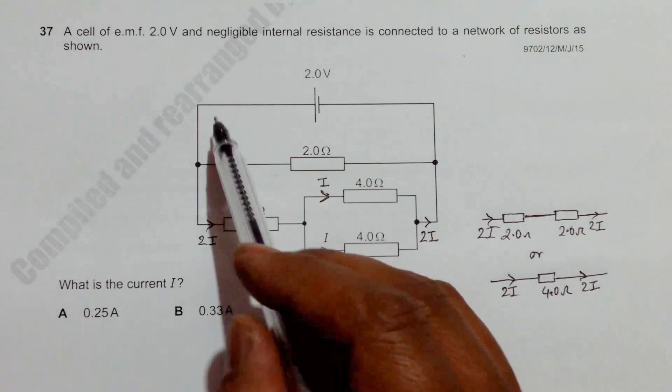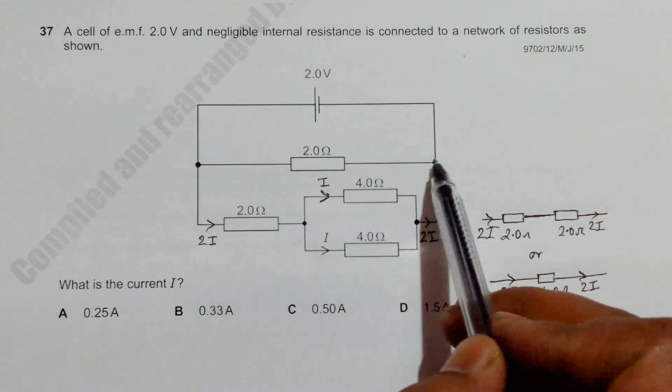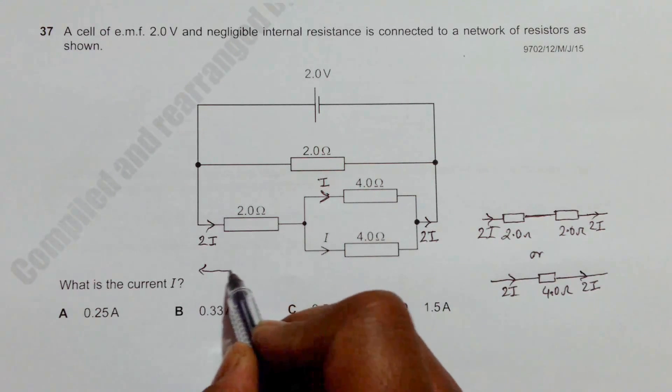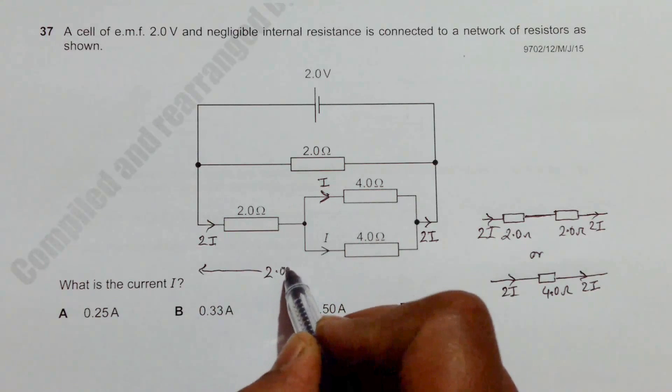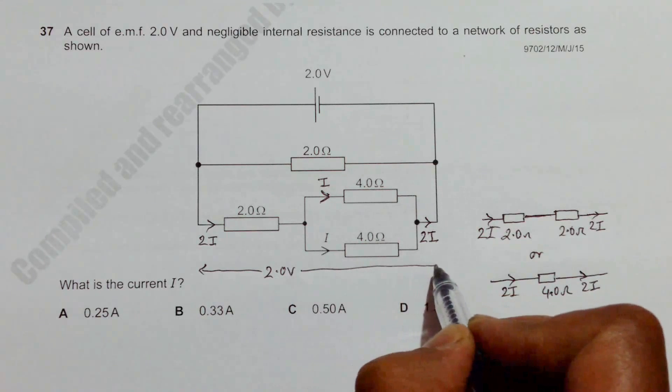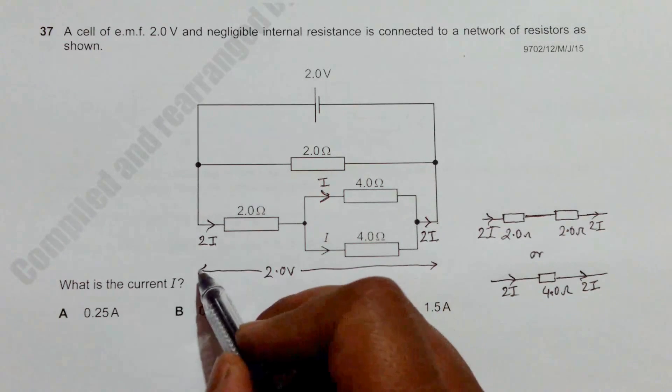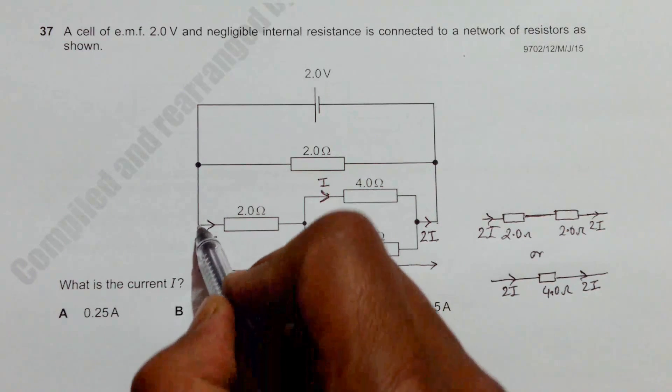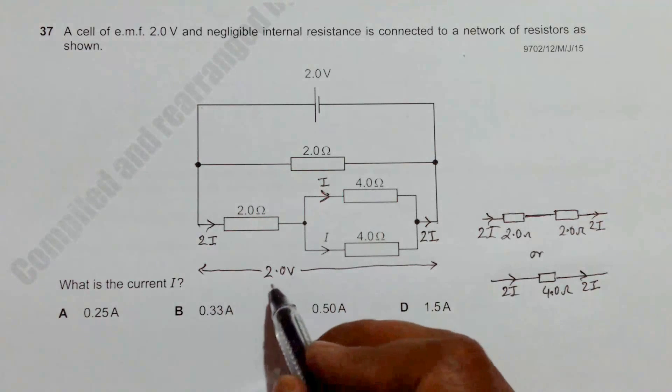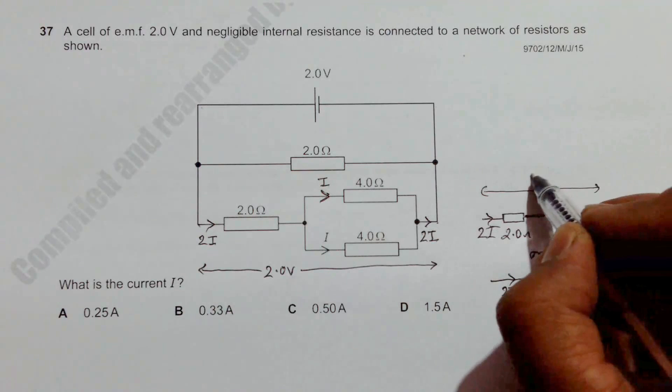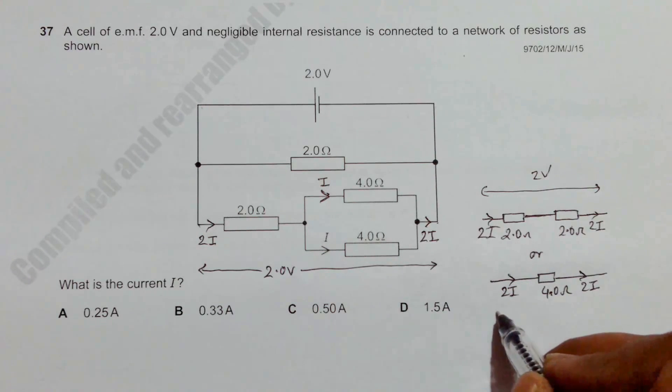Now if you look at the overall picture, the PD across this thing is 2 volt, that means the PD across this resistor should also be equal to 2.0 volt. Because this terminal means this and this means this terminal, so it's also 2 volt here and here we have 2 volt here.